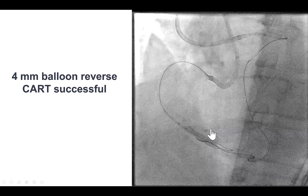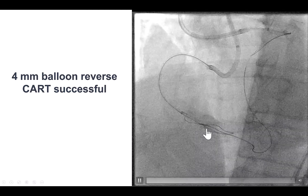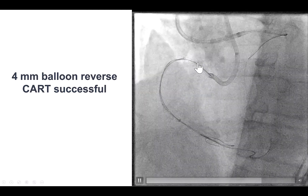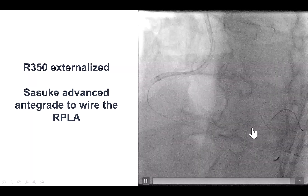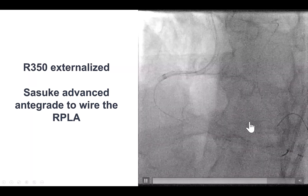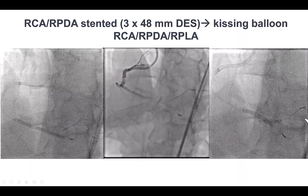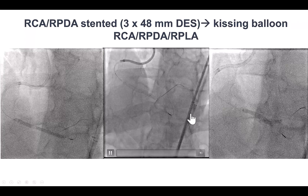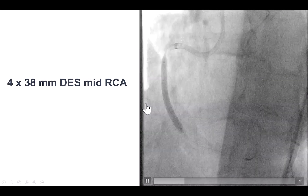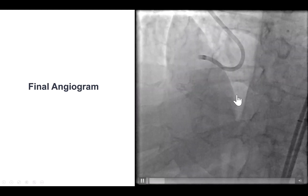We sized the balloon based on IVUS and used a 4 mm balloon. We then did reverse CART again, and this time were able to successfully advance the retrograde wire into the antegrade guide extension and externalized an R350. We preserved the large posterolateral using a Sasuke dual lumen microcatheter along with a workhorse guide wire advanced into the right posterolateral. We stented with a 3 by 48 mm DES from the PDA to the distal RCA, noted pinching of the posterolateral ostium, rewired with the Sasuke, and performed kissing balloon inflation. An additional DES was placed in the proximal to mid RCA, providing a nice final result with TIMI 3 flow in the RCA and good flow into both the right posterolateral and right PDA.